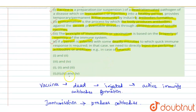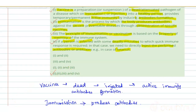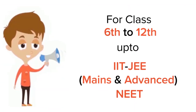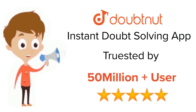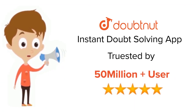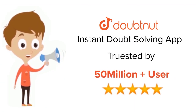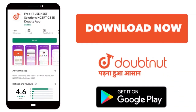So the answer is: statements one, two, three, and four — all are correct. For class 6 to 12, IIT JEE and NEET level, trusted by more than 5 crore students, download the DoubtNet app today.